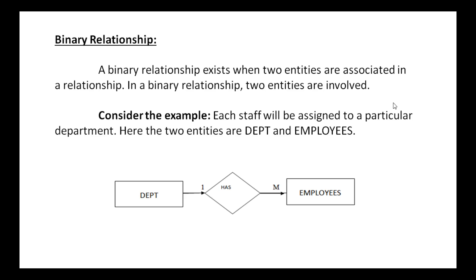Binary relationship is when two entities are associated in a relationship. Consider the example of department and employees: one department may contain several employees, and several employees belong to one department — each employee belongs to only one department. So a one-to-many relationship exists between department and employees. There are two entities — department and employees — associated in this relationship. That's why it is known as a binary relationship.